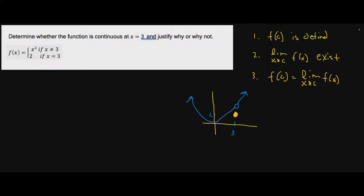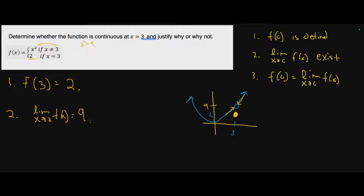The first thing to ask ourselves is: is the point defined? Well, the point is defined — when f equals three, my y value is two. That's what it says: when x equals three, my y value is two. So definition one does exist. Now let's find the limit. Does the limit as x approaches three exist? If you notice, the limit as we approach from the left and from the right does equal some y value. What is that y value? We plug three into the equation: three squared is nine. So we know the limit as x approaches three is nine, and it exists.